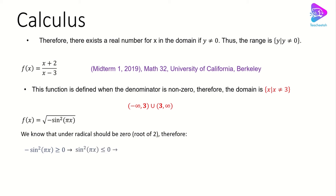Therefore, sine squared(πx) should be less than or equal to zero. It is impossible for sine squared(πx) to be less than zero because it is always a non-negative real number. So the only case we have here is sine squared(πx) = 0. Now, in order to solve this equation, we have to find for which values of x sine squared(πx) equals zero.